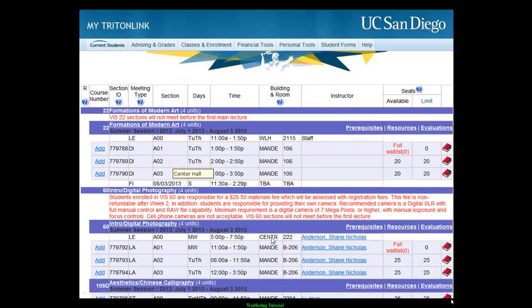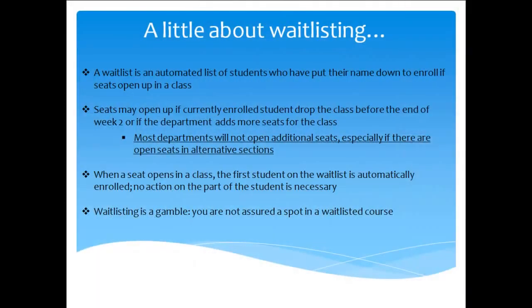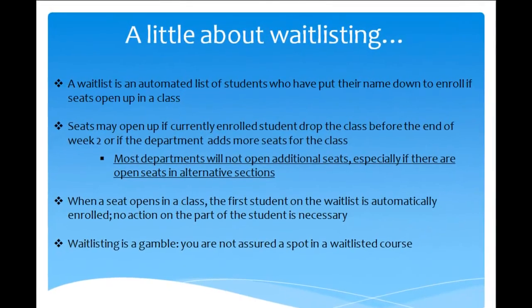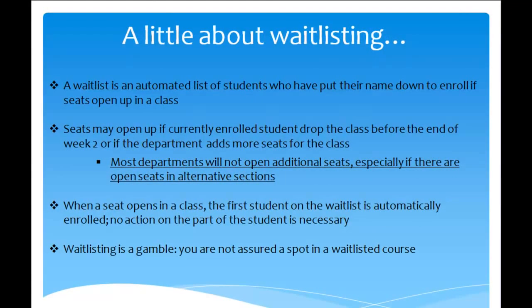One option you have is to add yourself to the automatic waitlist. The waitlist is a list of students who have put their name down to enroll in the class if seats open up. Seats might open up if people currently enrolled in the class drop before the end of week two of the quarter, or if the department adds more seats for the class.